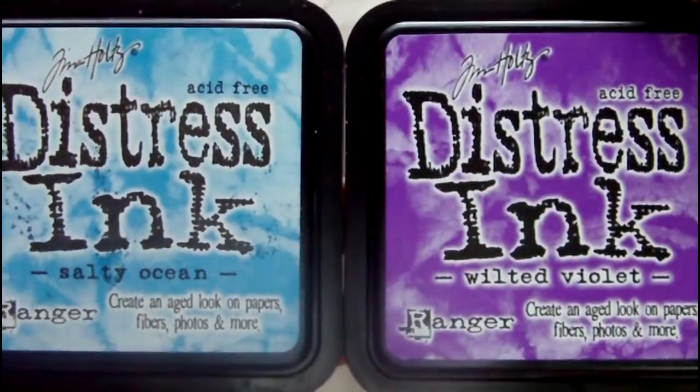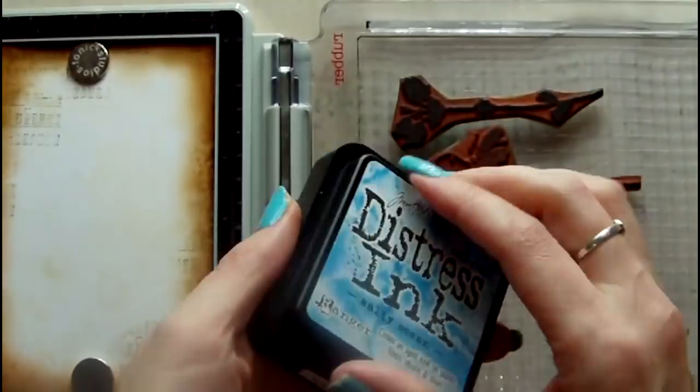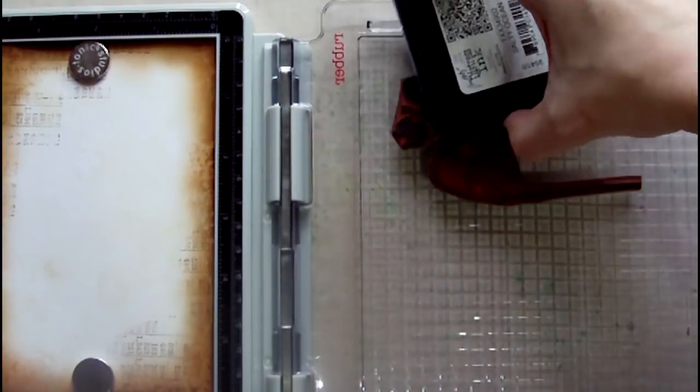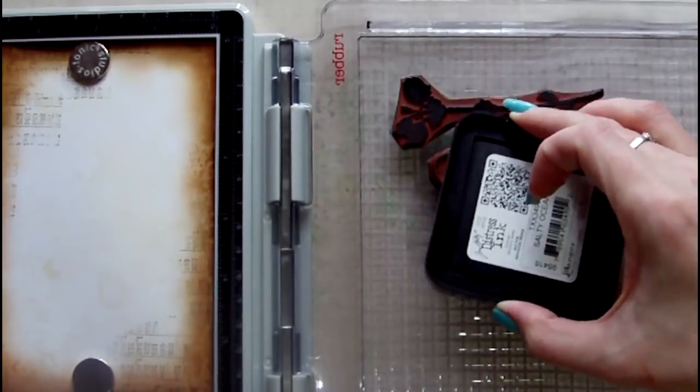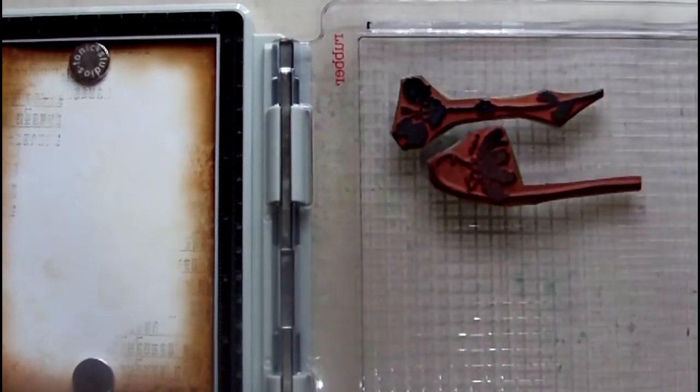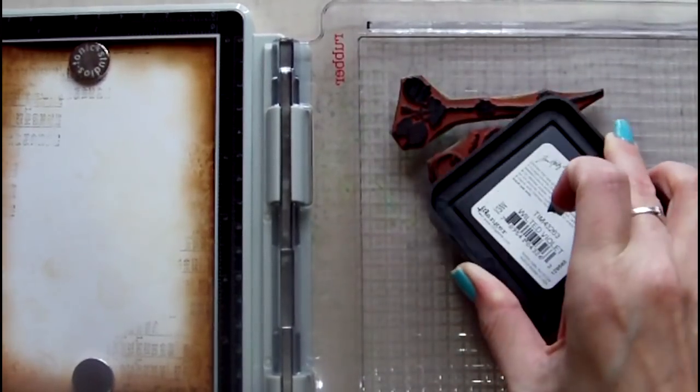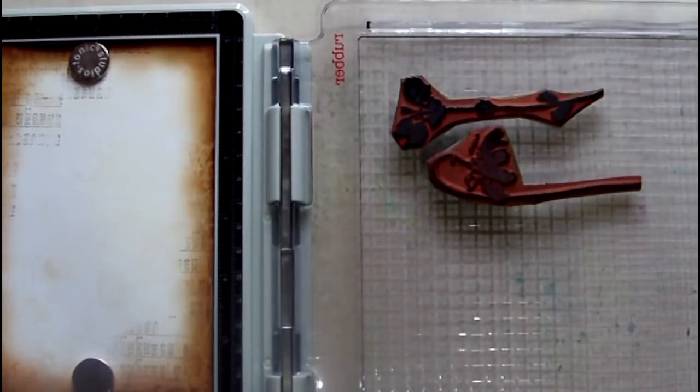For the focal elements on my postcard, I've chosen some wildflower stamps by Hero Arts. I'm stamping these with the aid of a Tim Holtz stamping platform, and what I've done is to lay them onto the platform where I'd like them to appear on the postcard. The postcard is held down by the magnets on the platform.